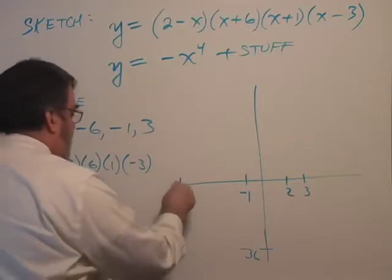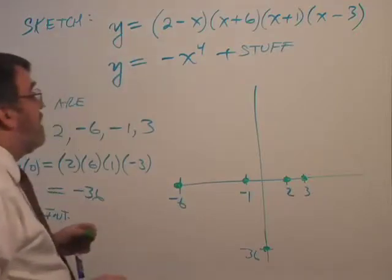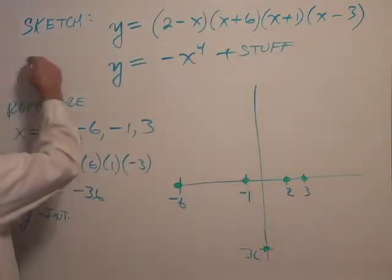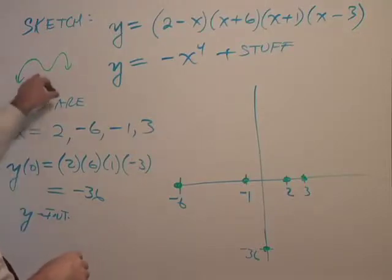So that means we have these points that the graph must go through. And we said it was kind of this M-shape, upside down, quartic shape, M-shape.